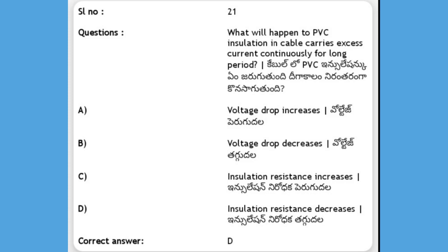Next, what will happen to PVC insulation in a cable that carries excess current continuously for a long period? Options: A) voltage drop increases, B) voltage drop decreases, C) insulation resistance increases, D) insulation resistance decreases. The answer is D, insulation resistance decreases.